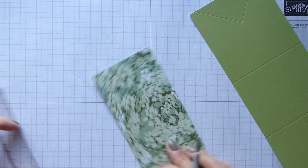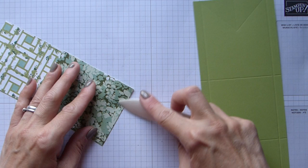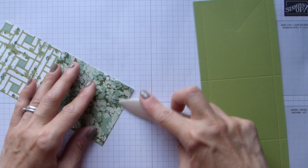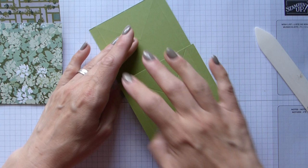Then we're going to fold and burnish. My DSP, I'm just going to fold those straight score lines. This is made up exactly the same as the other one, just slightly bigger.